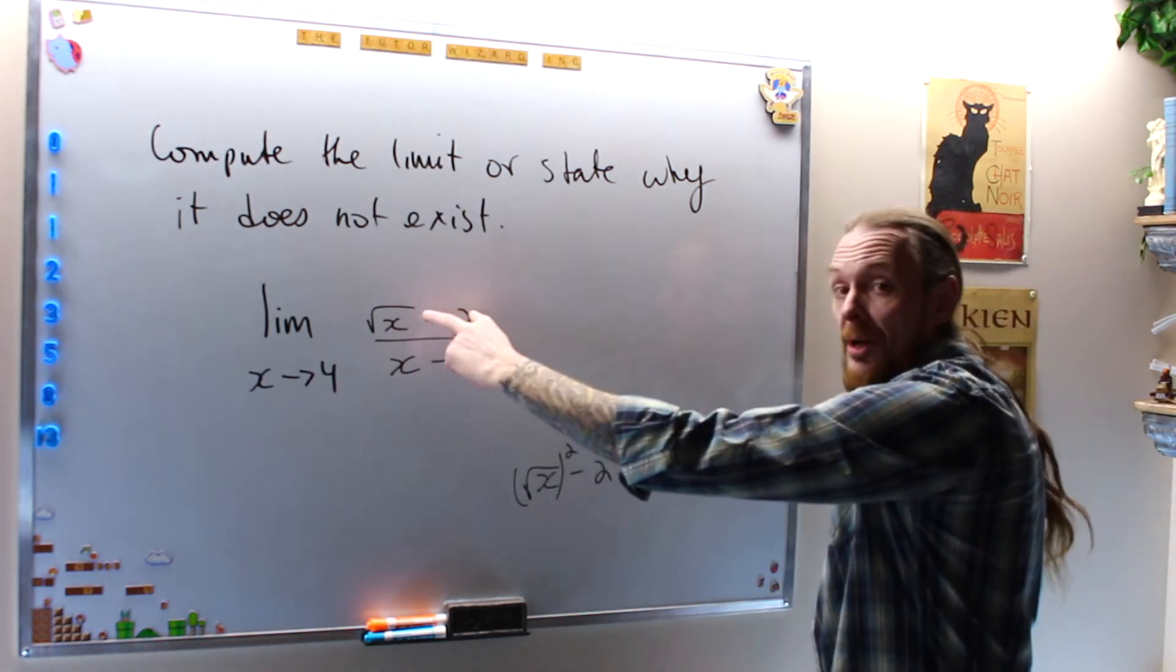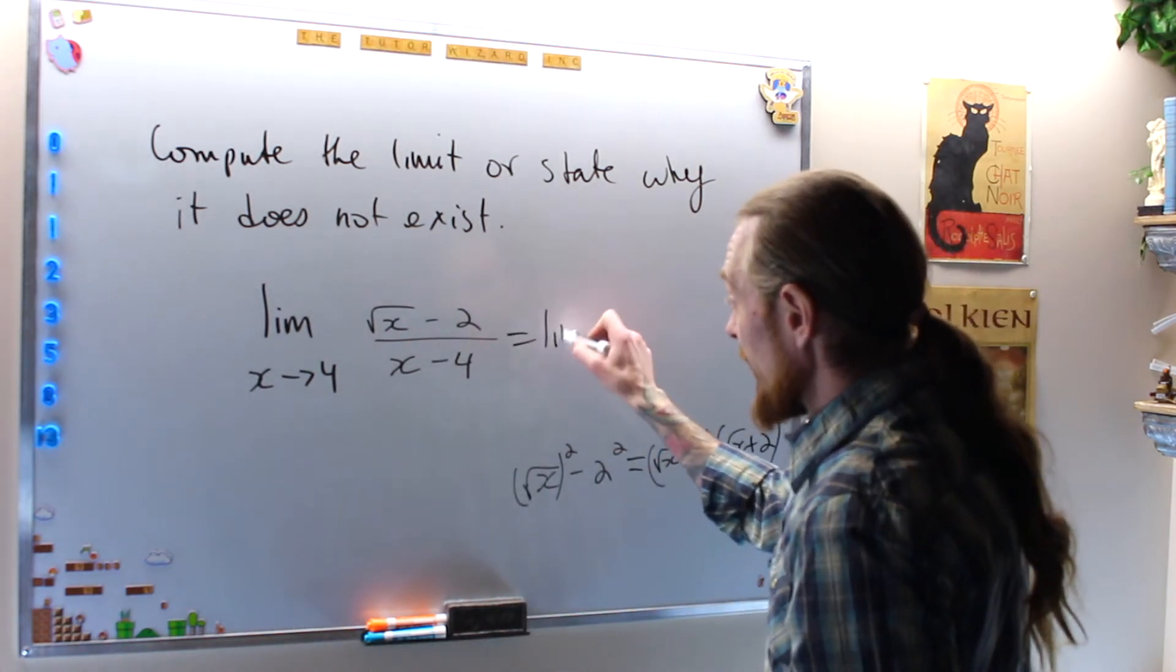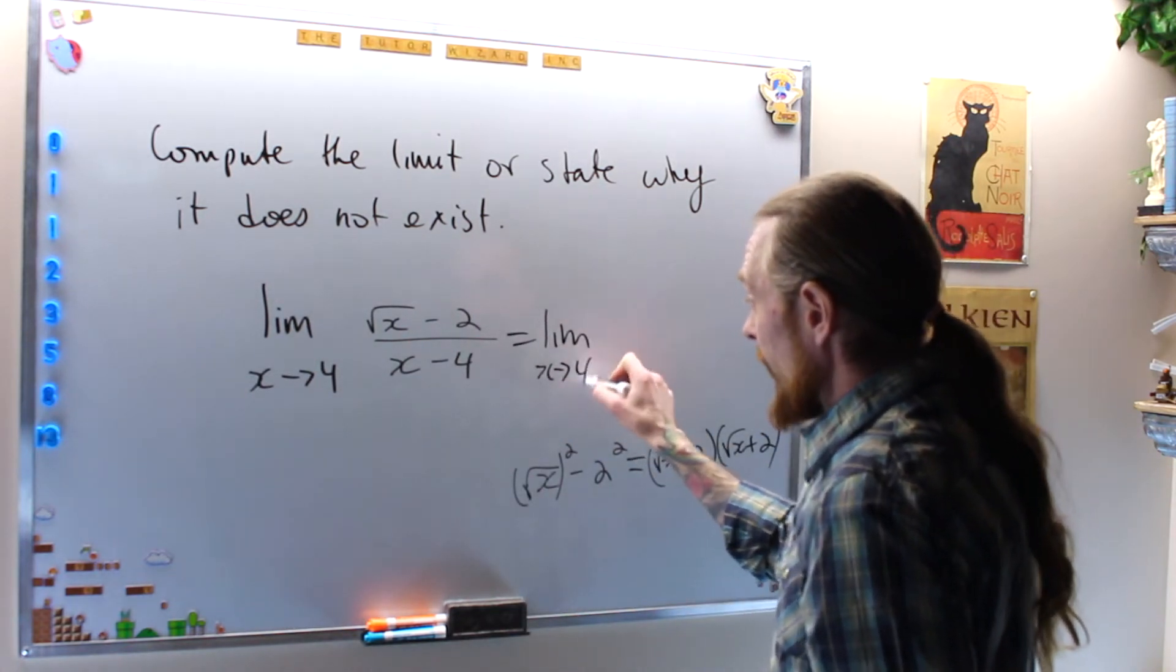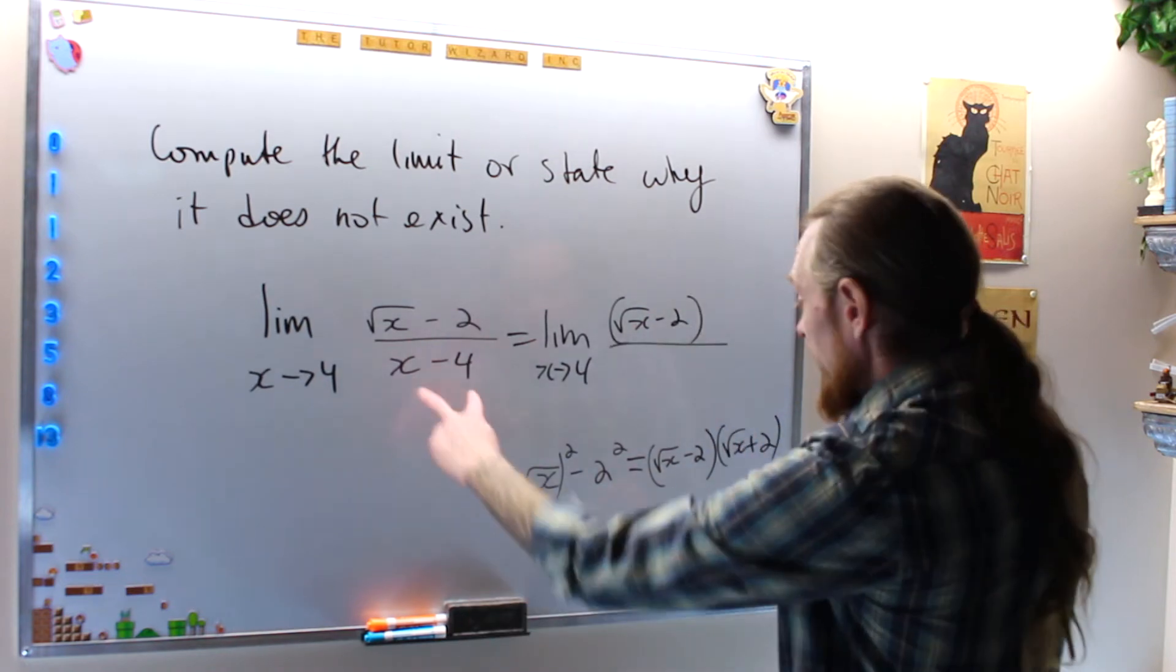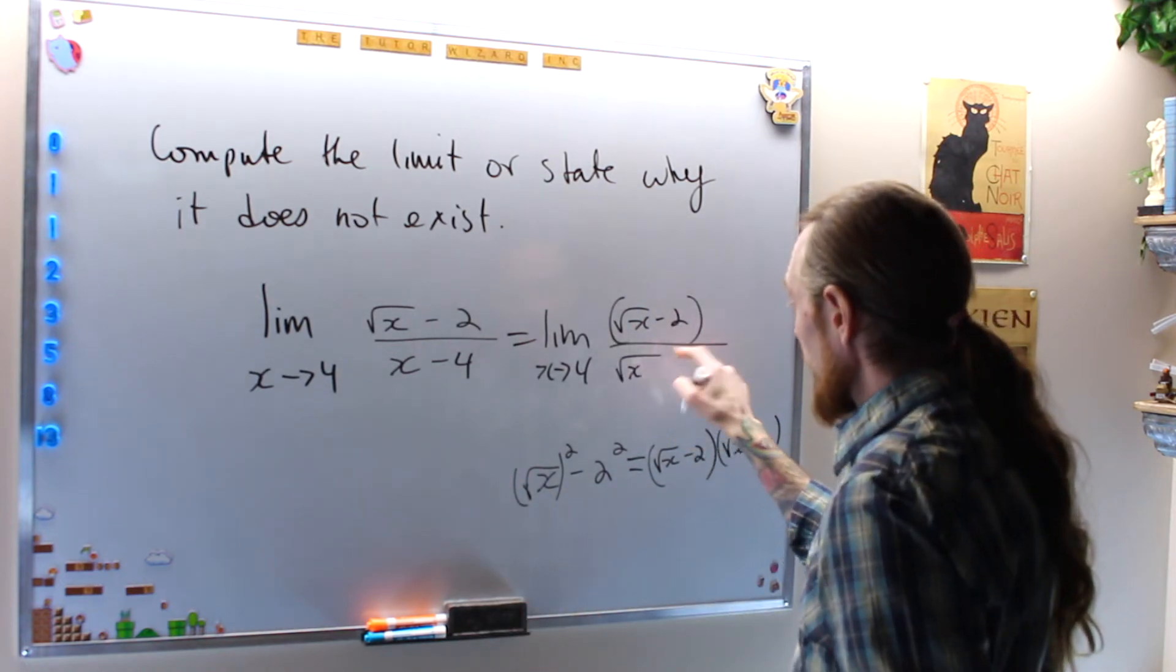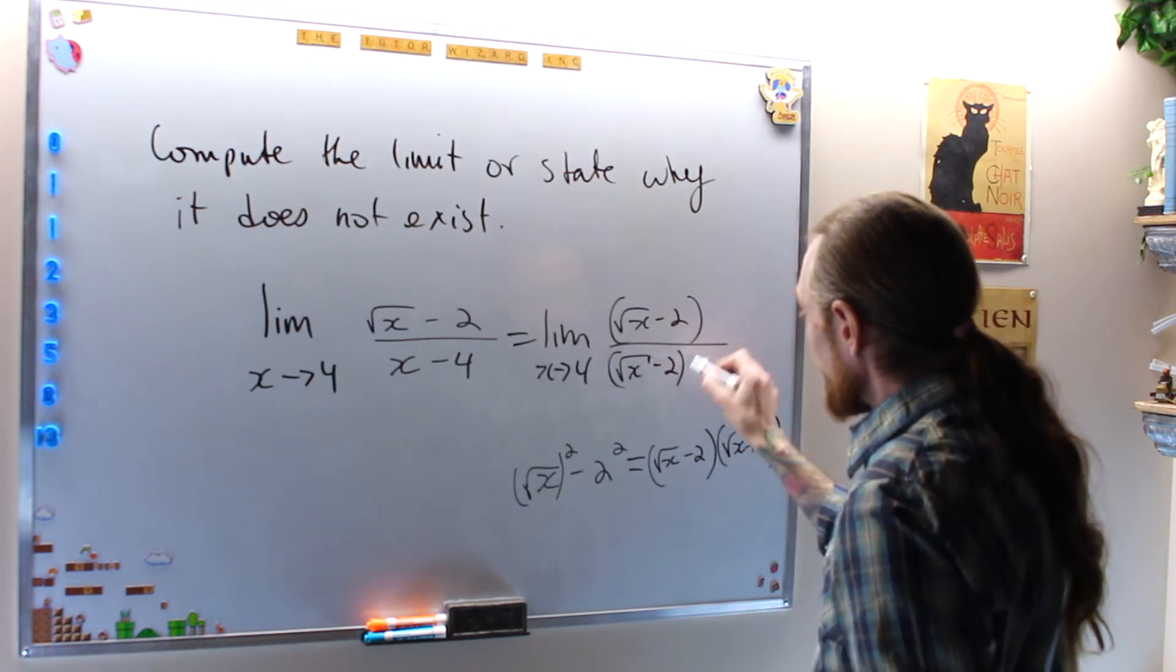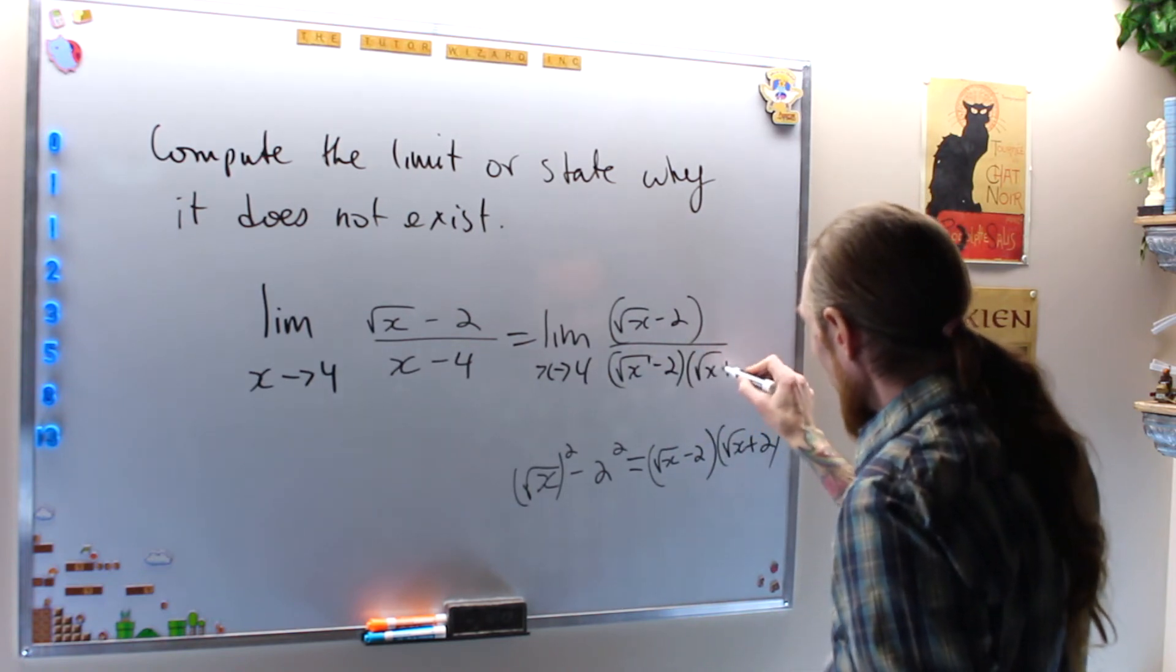And the hint was on the top already, they're going to cancel, so this is equal to the limit as x approaches 4 of the square root of x minus 2 over the square root of x minus 2 times the square root of x plus 2.